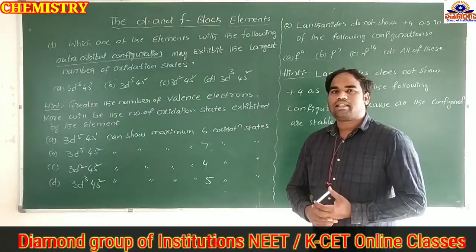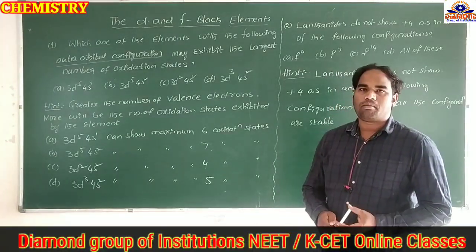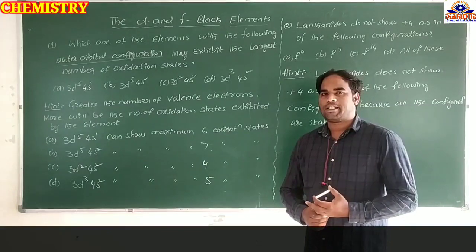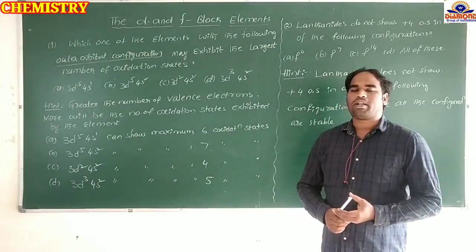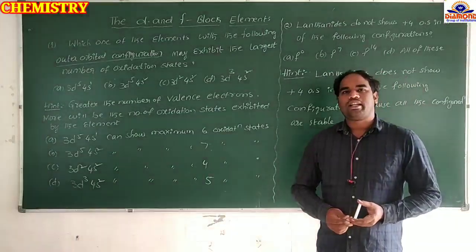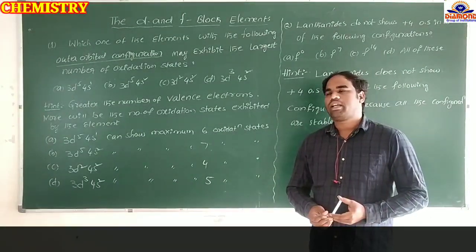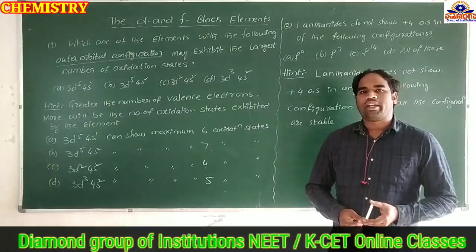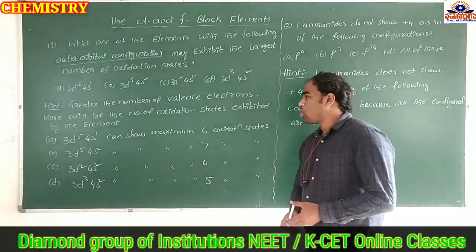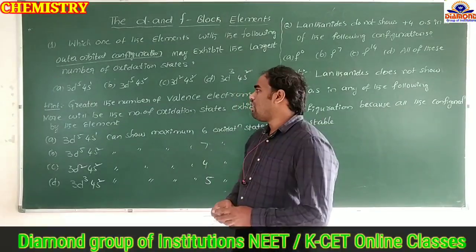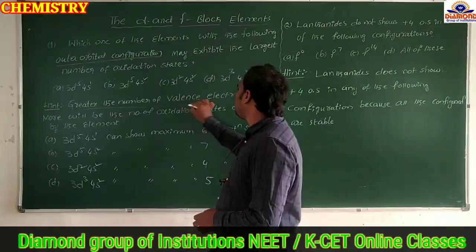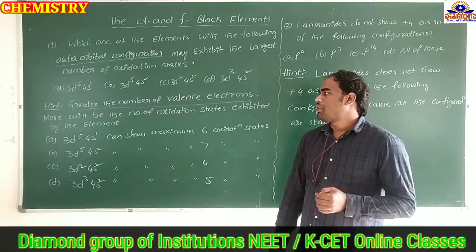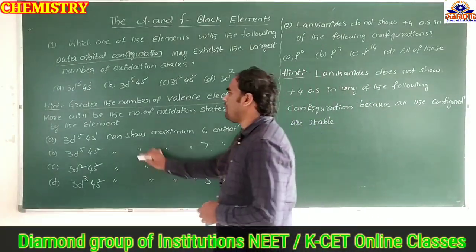D-block elements show variable oxidation states, which is one of their distinct characters compared to s-block and p-block elements. They show variable oxidation states because they have a greater number of valence electrons in their outer electronic configuration. Therefore, the greater the number of valence electrons, the more oxidation states an element can show.